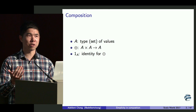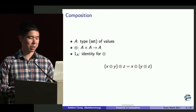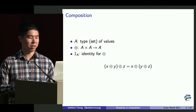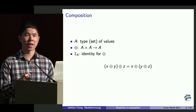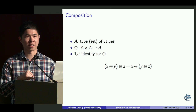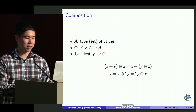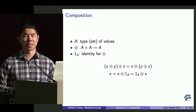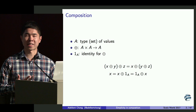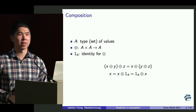We want these things to follow a certain set of behaviors. First, we want the operation to be associative: combining X and Y, then combining the result with Z, should always give the same answer as combining X with the result of combining Y and Z. Second, we want identity to act as both left and right identity: X should be the same as X combined with identity, which should be the same as identity combined with X.